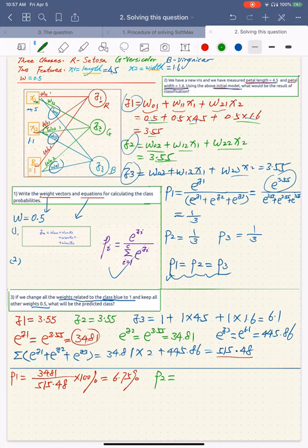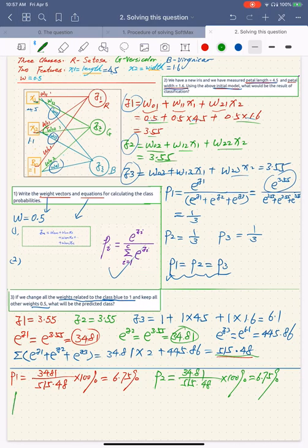And then the P2, same thing here, 34.81 over 515.48, so 6.75%.